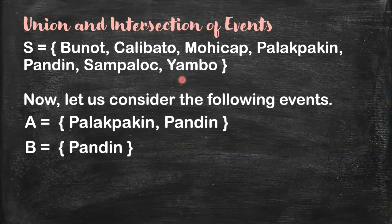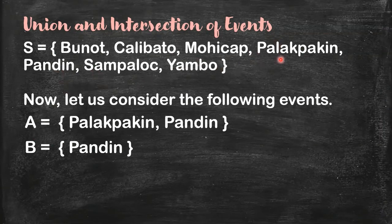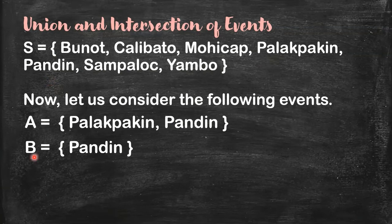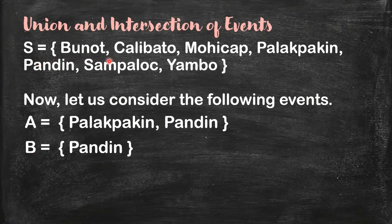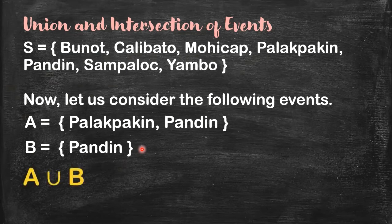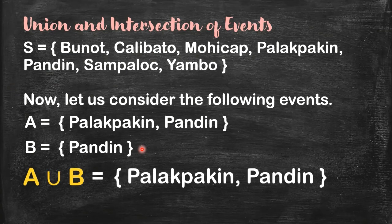Now let's consider these events. Event A is choosing a lake that starts with the letter P. If you check, we have two lakes here that start with the letter P: Palakpakin and Pandin. B is the event of choosing a lake with six letters. You can count them one by one, and you'll see Pandin is the only lake that has six letters.